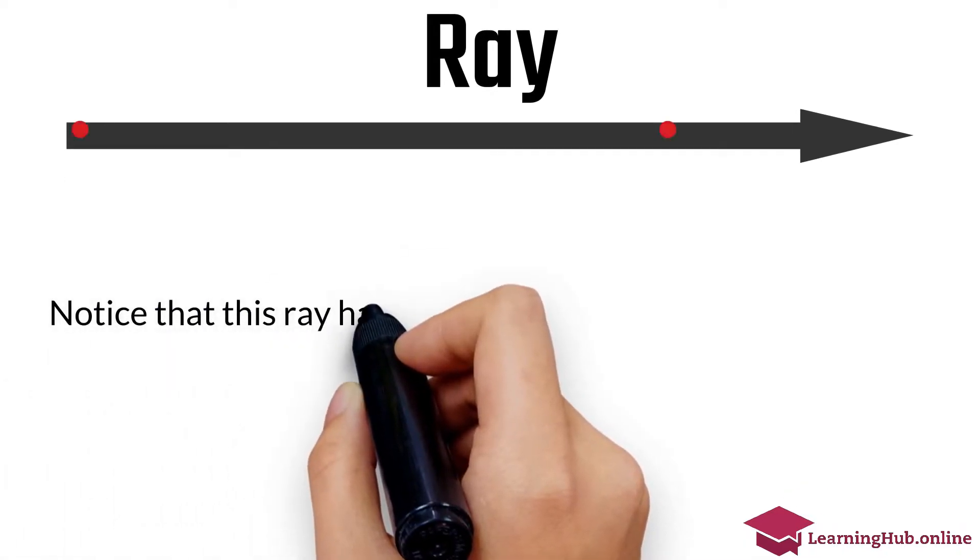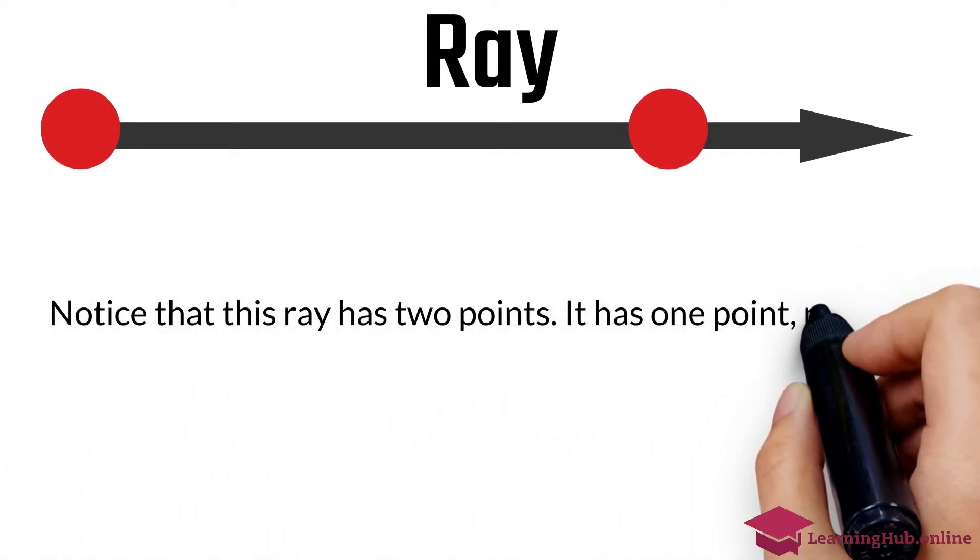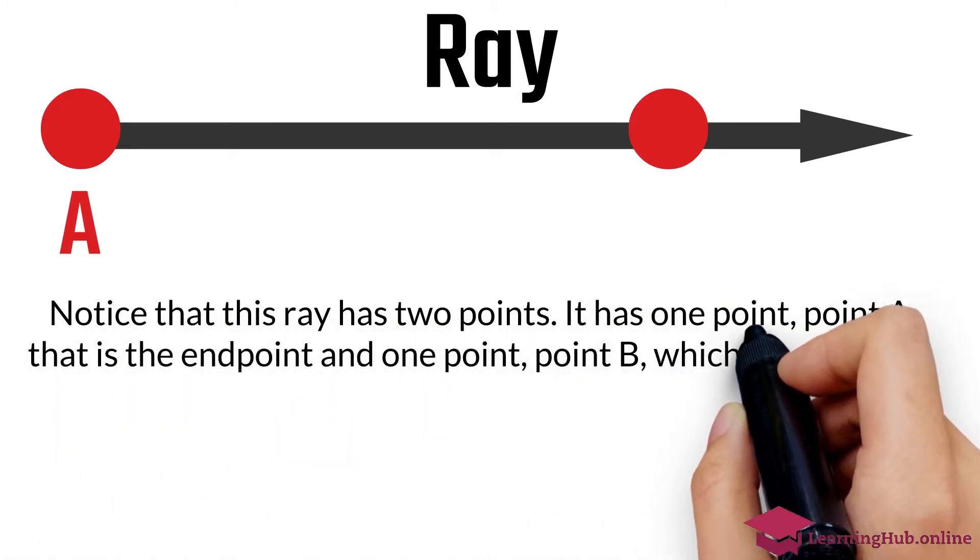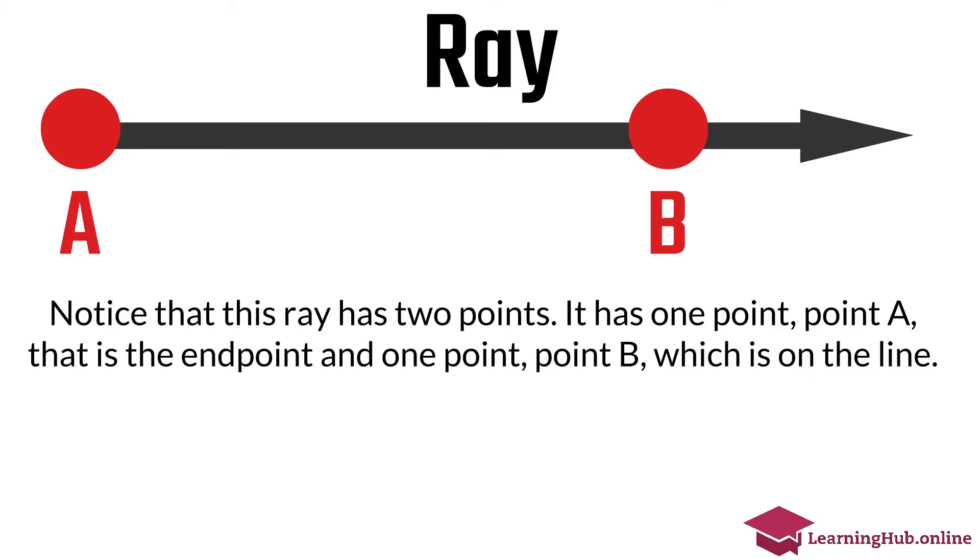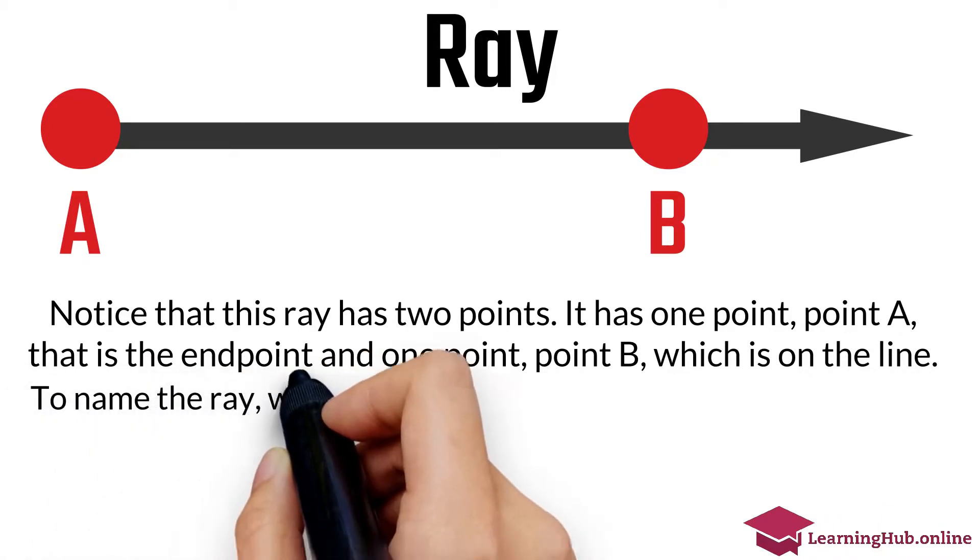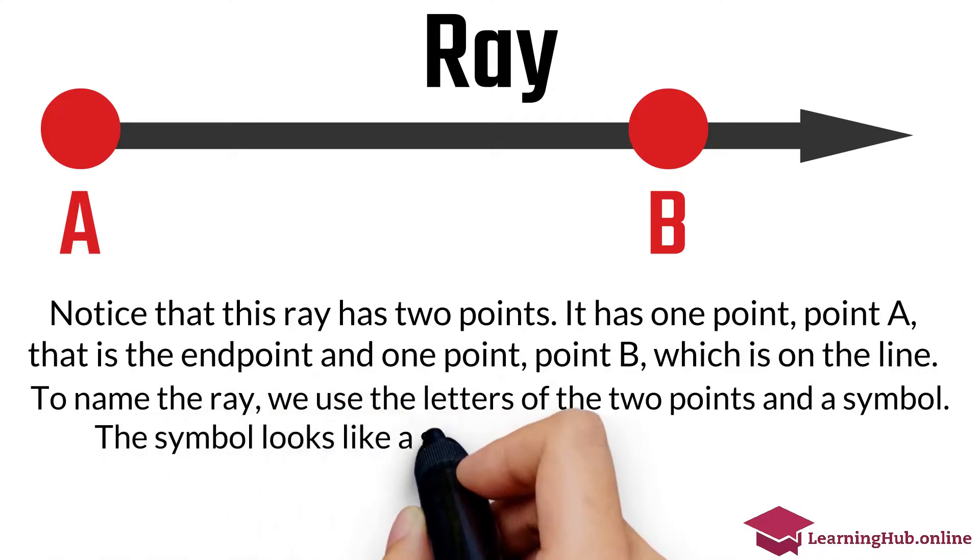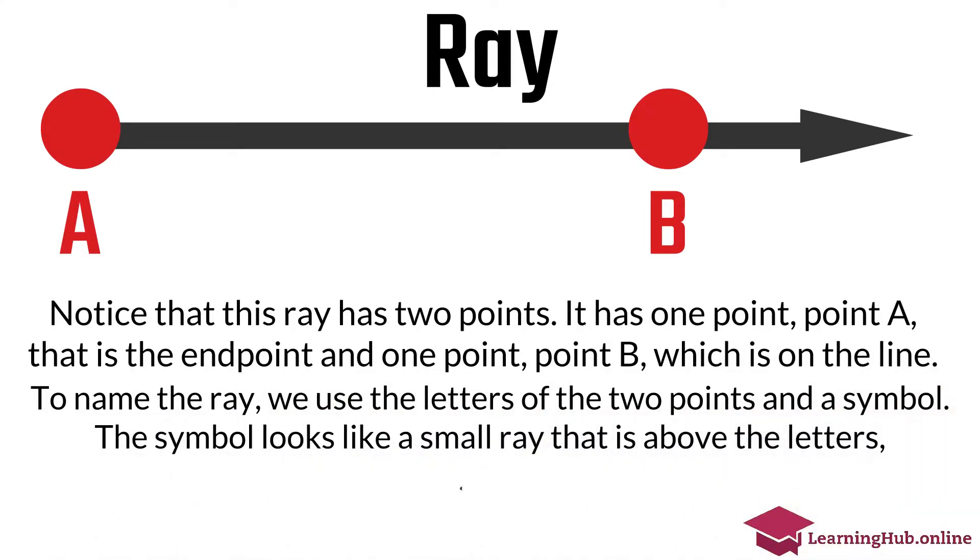Notice that this ray has two points. It has one point, point A, that is the endpoint, and one point, point B, which is on the line. To name the ray, we use the letters of the two points and a symbol. The symbol looks like a small ray that is above the letters.